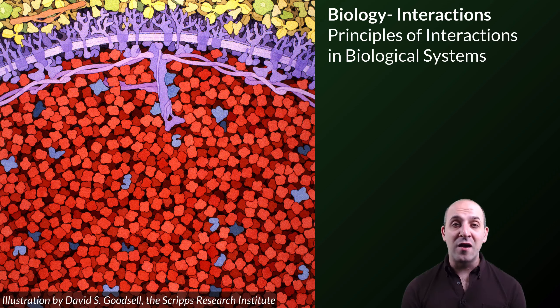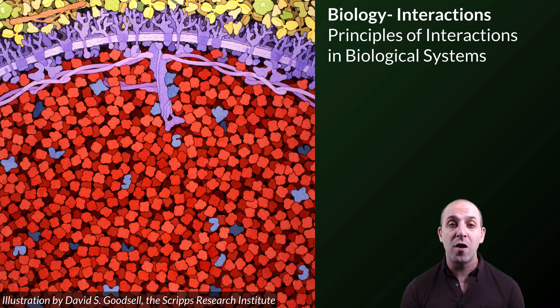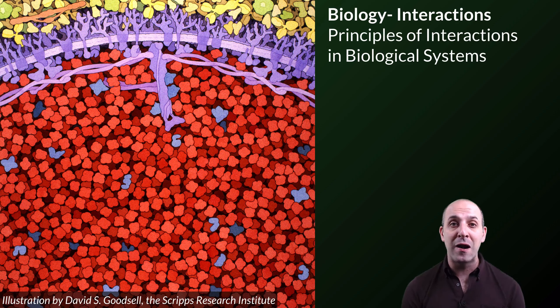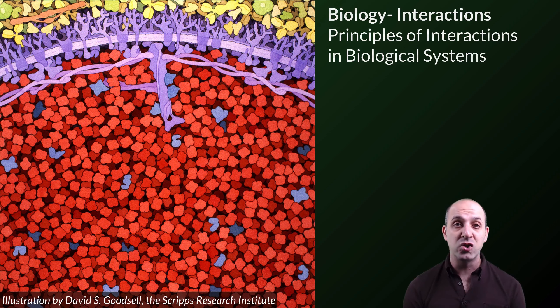They're still incredibly complex. And that complexity comes from the interactions among all of the parts of the red blood cell, and the way that those parts then interact with the larger system of our circulation and our bodies as a whole. That's what we're talking about in this unit, is how different parts of biological systems interact with each other.